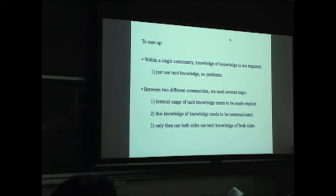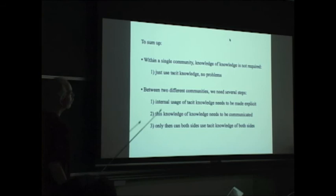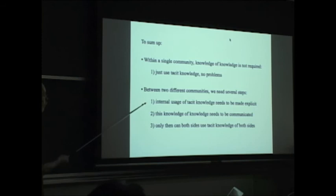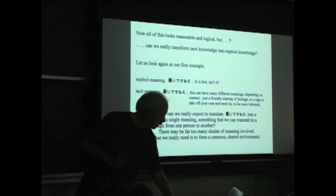So, to sum up this part of my talk, within a single community, knowledge of knowledge is not required. Knowledge is enough. You don't need knowledge of knowledge. Just use tacit knowledge. That is, there are no problems. Between two different communities, we need several steps. Internal usage of tacit knowledge needs to be made explicit. This knowledge of knowledge needs to be communicated. Only then can both sides use tacit knowledge of both sides. So, this, what I have said so far, is the minimum, the minimum that you need to do interdisciplinary collaborations. But now, I will argue that this is not enough. It is more than what people generally do. But the situation is more complicated.